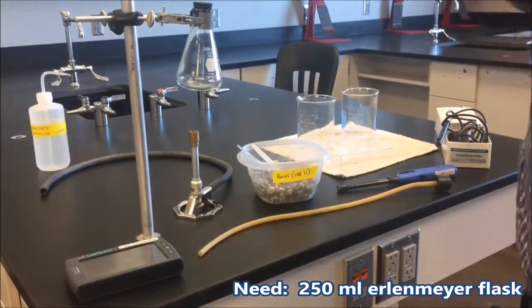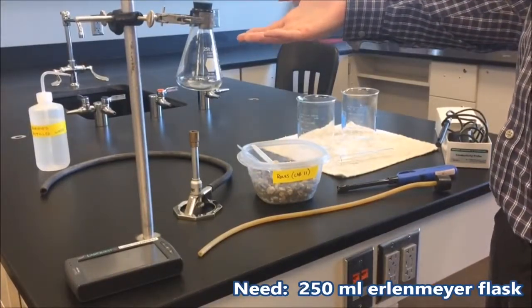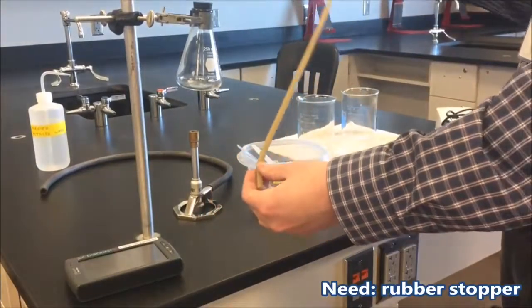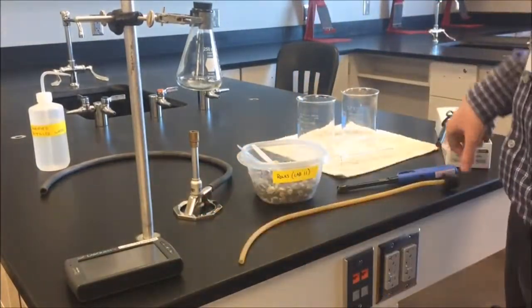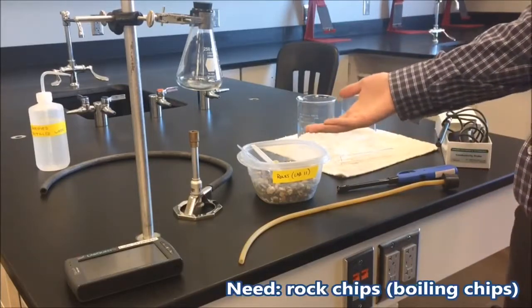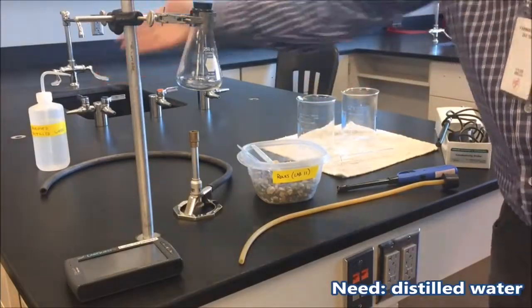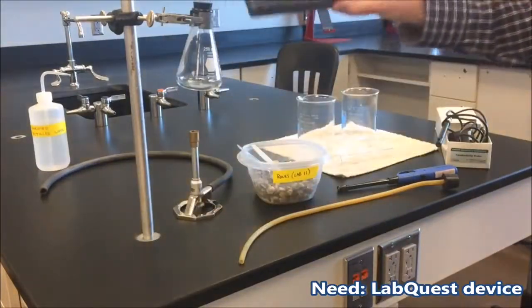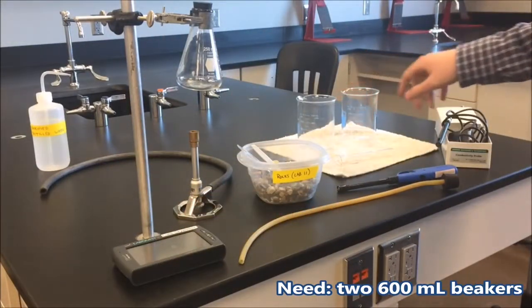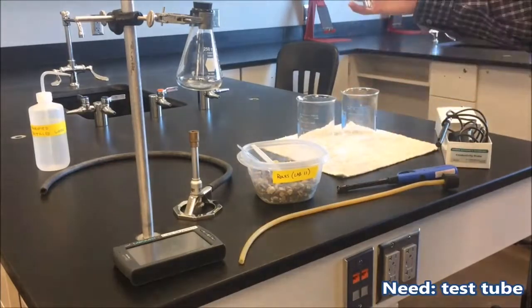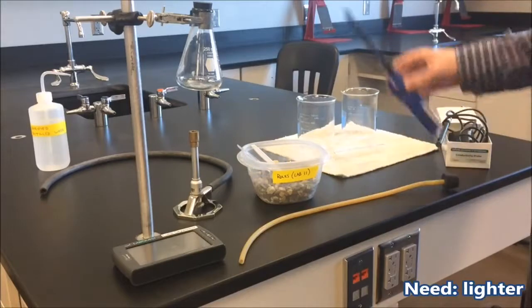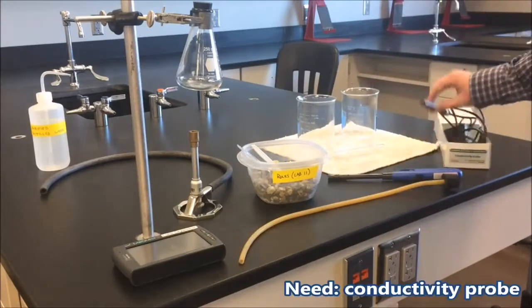For this lab we'll need a 250 milliliter Erlenmeyer flask, a Bunsen burner, a rubber stopper that we'll use for the Erlenmeyer flask while the procedure is running, rock chips or boiling chips, distilled water, our LabQuest device, two 600 milliliter beakers, a test tube that we'll be distilling our fresh water into, a lighter, and a conductivity probe.